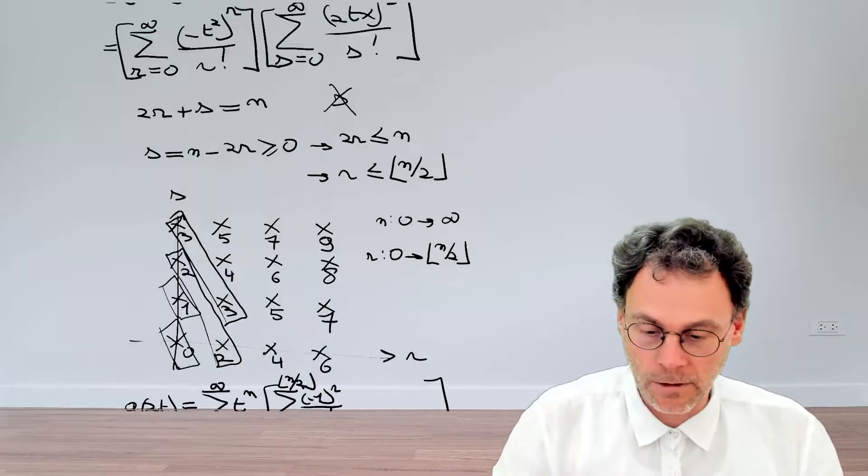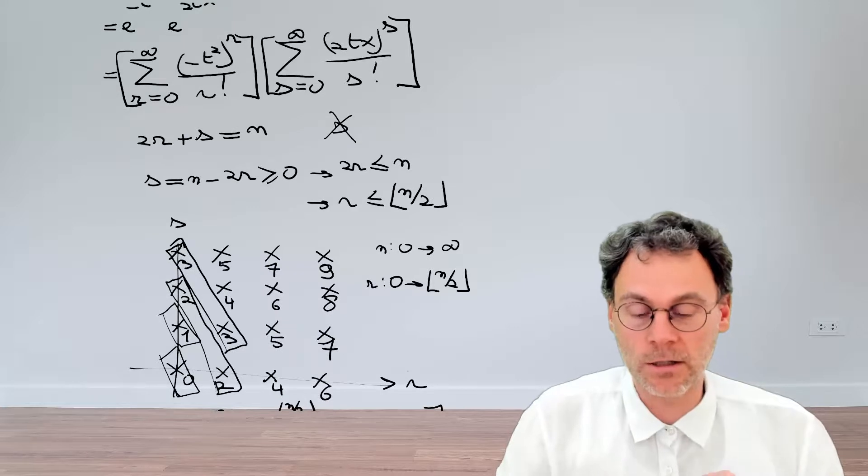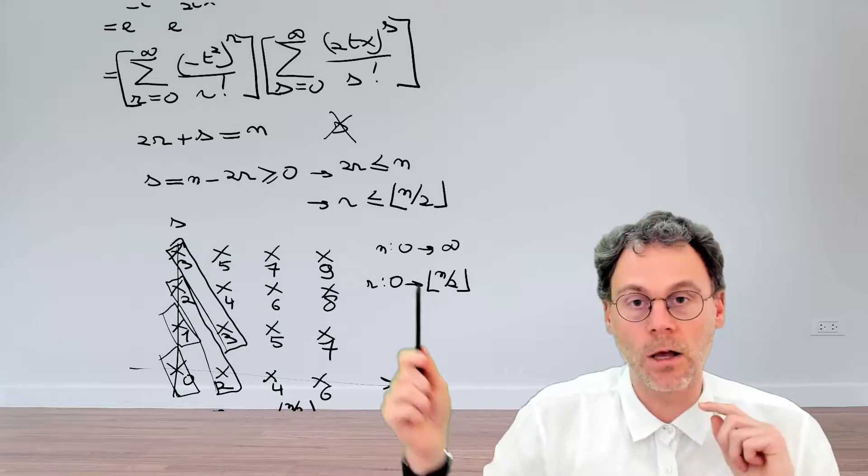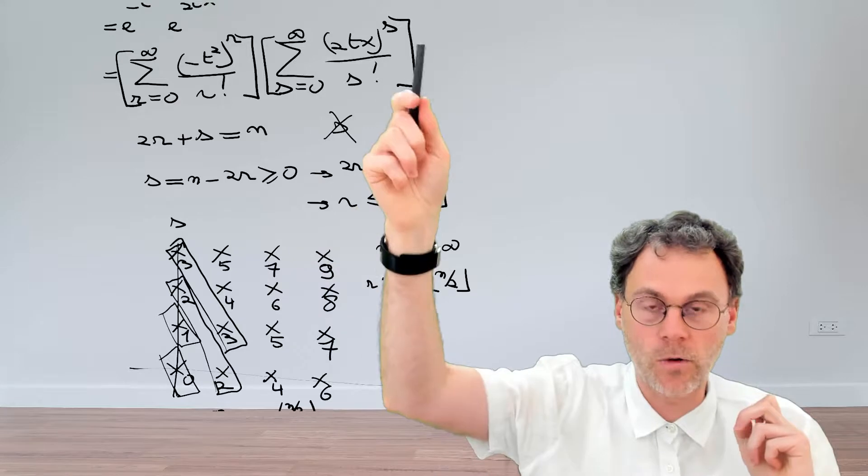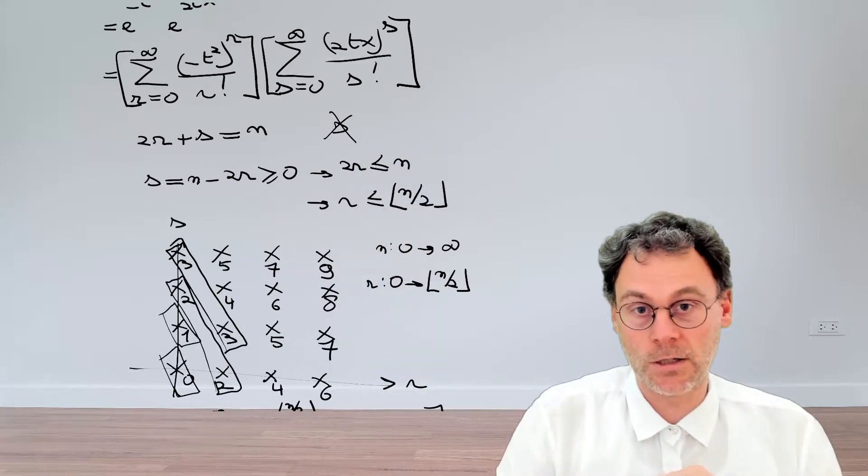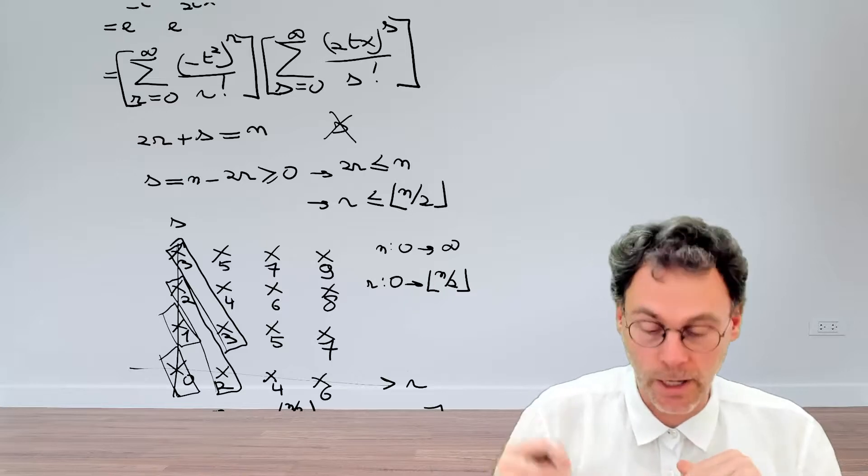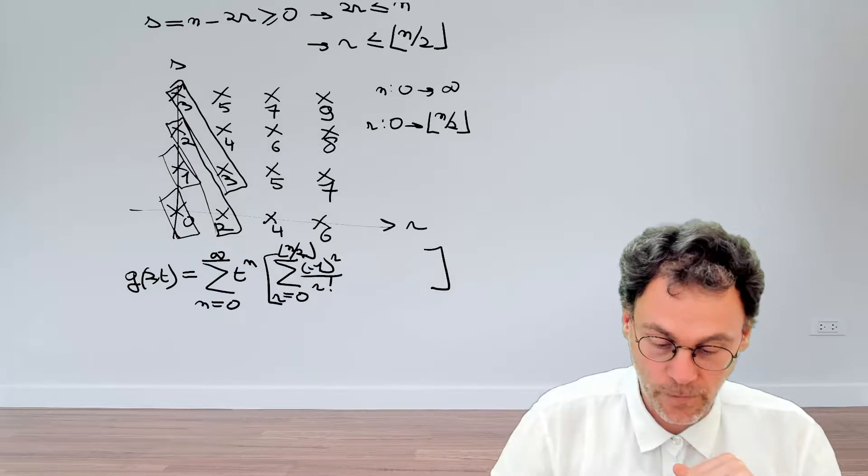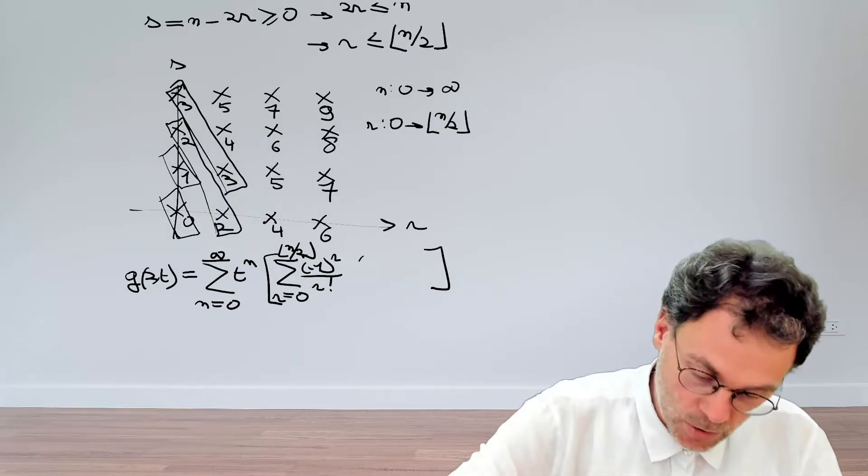And then going back to our second series expansion, what's left here is 2x to the power of s divided by s factorial, but we've gotten rid of s, so we should replace s by n minus 2r. Okay, let's do that.